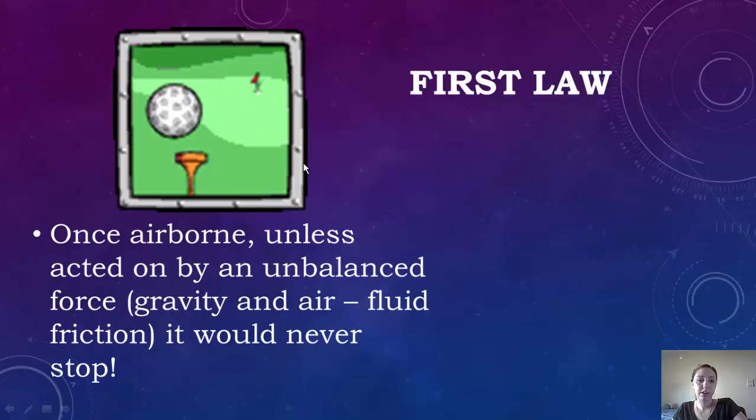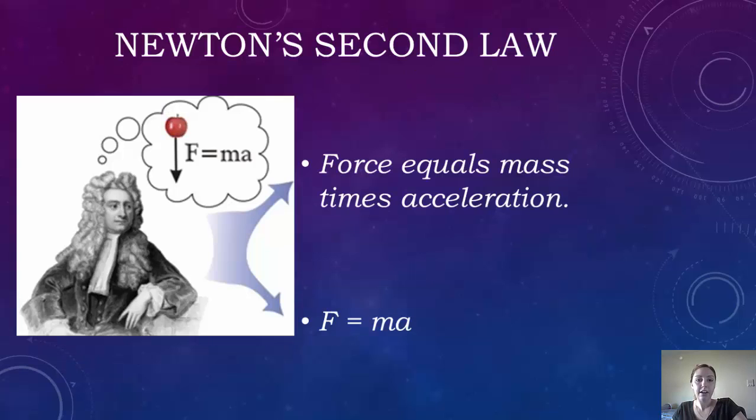So let's look at a golf ball for an example. When you hit the golf ball off the tee, it's going to fly in the air. So unless acted on by an unbalanced force, it would never stop. But since you have gravity and you have air, that's going to act as fluid friction. And it's eventually going to stop and fall to the ground.